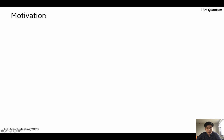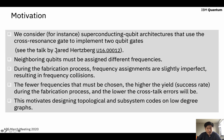The motivation of this work was partially discussed by Jerry's talk, which I also recorded. We consider superconducting qubit architectures, for example the one that uses cross resonance gate to implement two qubit gates. In this kind of architecture, neighboring qubits must have different frequencies. However, due to the fabrication process, there are always some imperfections in the frequency assignments, which will result in frequency collisions. The fewer frequencies that must be chosen, the higher the yield during the fabrication process, and in general the lower the crosstalk errors will be. This motivates designing topological and subsistence codes on low degree graphs, which will have lower frequency collisions.